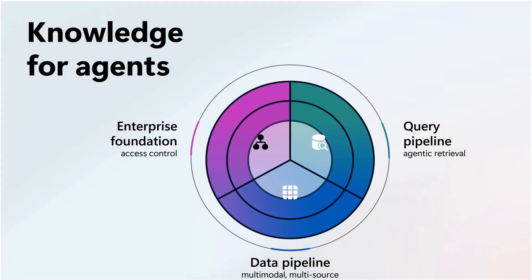Search for AI agents has matured across three critical dimensions: the query pipeline enabling dynamic and context-aware retrieval; the data pipeline which enriches input with multi-modal and multi-source data; and most importantly, the enterprise foundation, assuring access control and security for compliance. This marks a shift from merely adapting search technology toward architecting agent-specific retrieval frameworks.